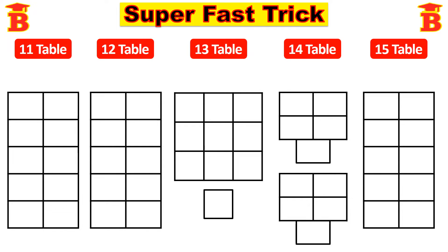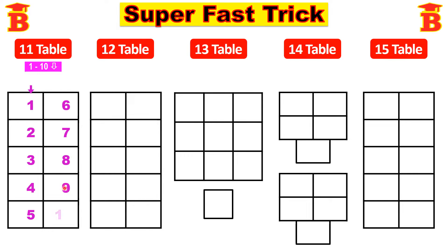First let us write the 11 table. There are two steps. First step: write the numbers from 1 to 10. See the arrow mark. So we have to write the numbers 1, 2, 3, 4, 5, 6, 7, 8, 9, 10.